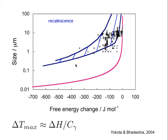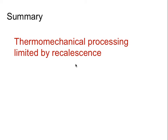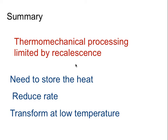You need a mechanism of dissipating heat or storing it as strain energy. Thermomechanical processing is limited by recalescence. To produce bulk nanocrystalline steel, we need to store the heat of transformation. If we reduce transformation rate, heat has time to diffuse out. Always good to transform at low temperature for large driving force and greater nucleation rate.